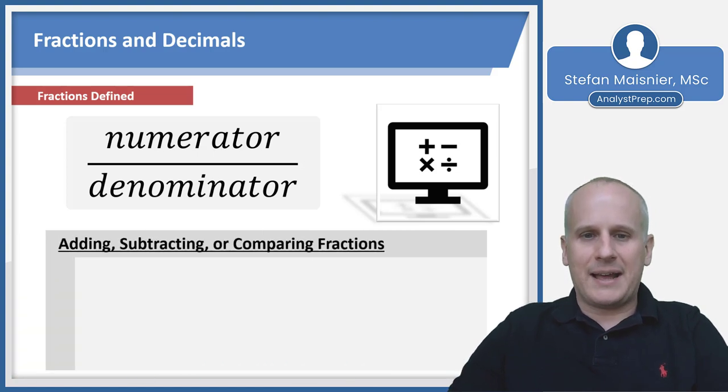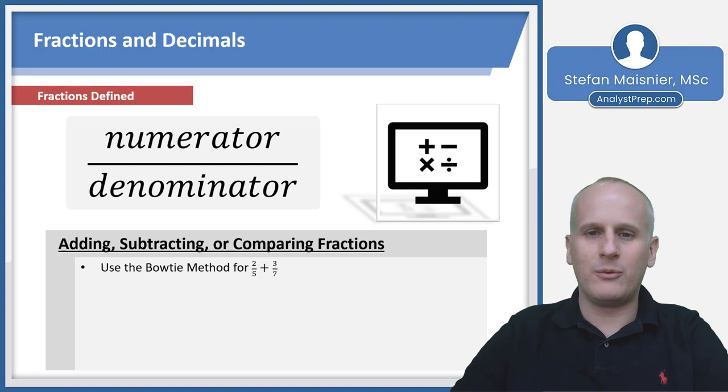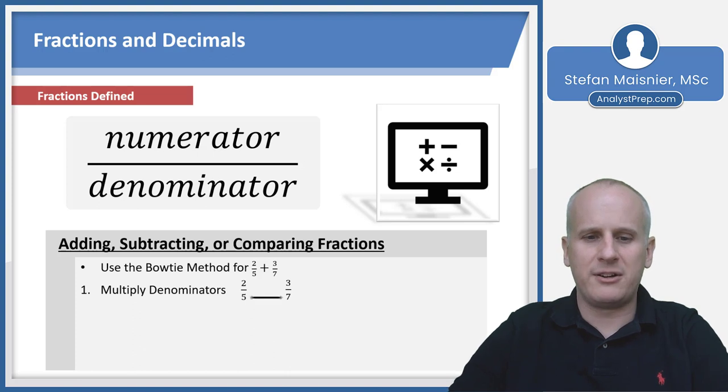Another thing with fractions is you may be asked to add, subtract, or compare. In that case, you need to create a common denominator using the bowtie method. The bowtie is the path of least resistance. First, multiply your denominators for the common denominator. So for two fifths plus three sevenths, our new common denominator is 35.